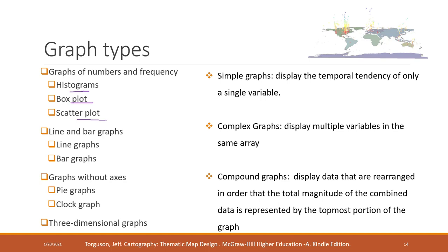The graphs can be classified into simple graphs that show the variation of only one single variable. For example, the histogram is normally used to show the distribution of a single variable. Complex graphs are used to show multiple variables. And we have compound graphs that display data that are rearranged so that the total magnitude of the combined data is represented by the topmost portion of the graph. We will see some examples later.